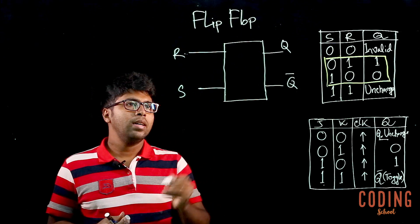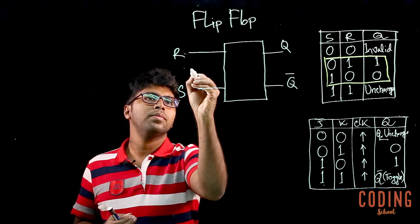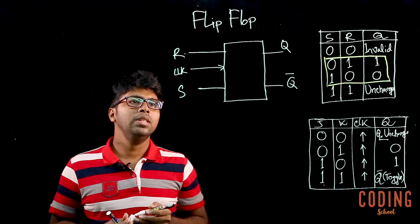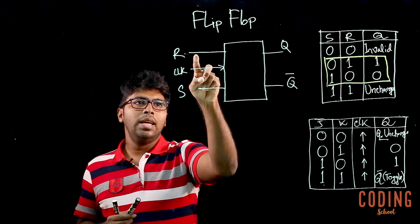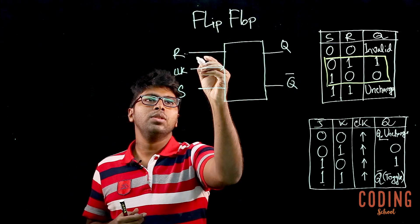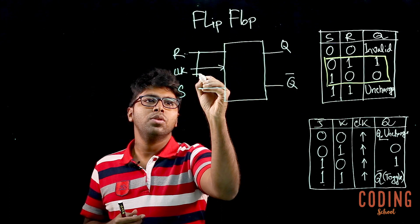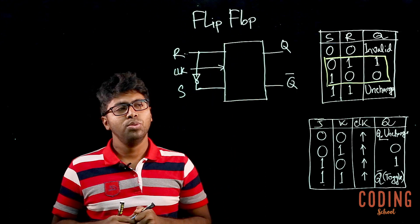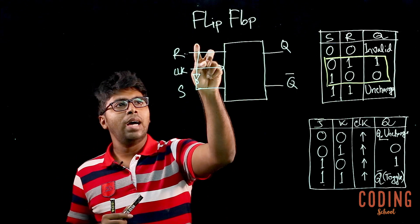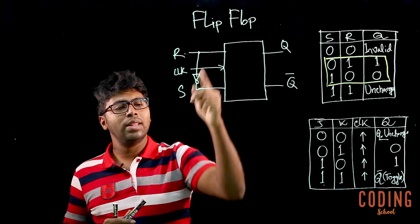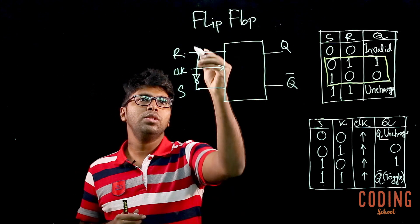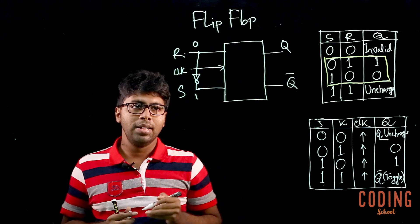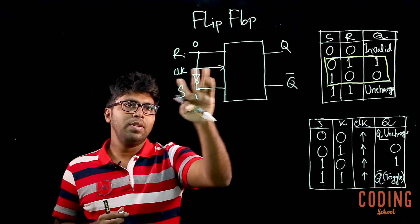Now we will look at the clock pulse. We will take this input data from one input to another input. The result is that when the value of one input is 0, the other is 1, and when it is 1, the other is 0. This is the simple loop of the A and A-bar flip-flop.